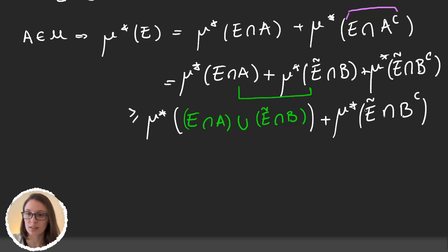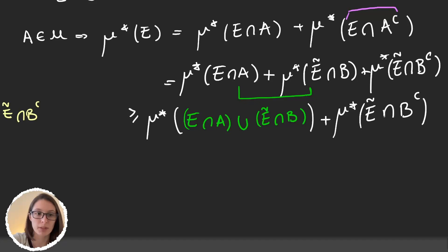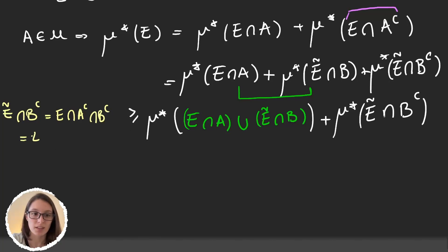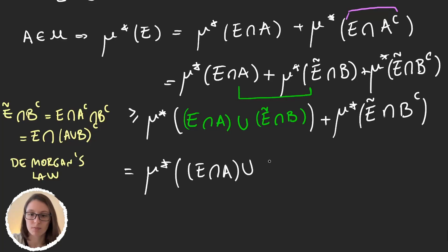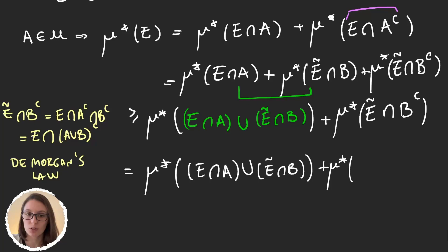Let's leave the last term as it is and think about what Ẽ ∩ B^c is. Ẽ ∩ B^c equals (E ∩ A^c) ∩ B^c, and this is equal to E ∩ (A ∪ B)^c by De Morgan's law. So the last term gives us μ*(E ∩ (A ∪ B)^c).